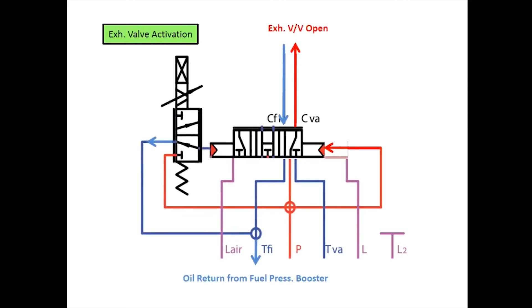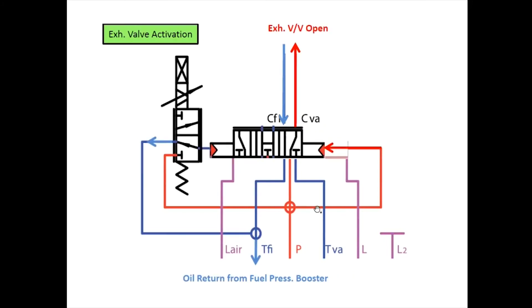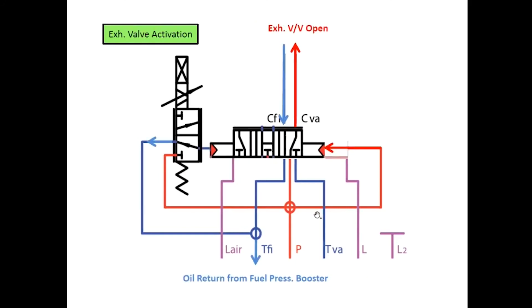When we have exhaust valve activation, oil returns from here and supplies to here for the exhaust valve actuator. We also have drain from the exhaust valve and supply to fuel injection. There must be a supply somewhere and a return somewhere each time.